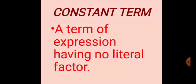Types of terms — first is constant term. A term of an expression having no literal factor is called a constant term. It means it doesn't have a variable. For example, in 4X + 5, the constant term is 5, because it has no literal factor — no variable. That's why it is called a constant term.